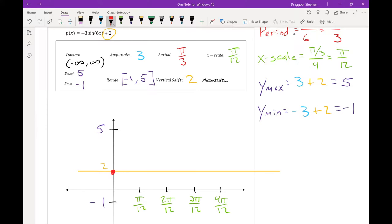So my first point will be at 0, 2, and then at π over 12, negative 1, back to 2, up to 5, and back to 2. And connect those dots.